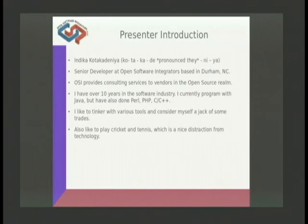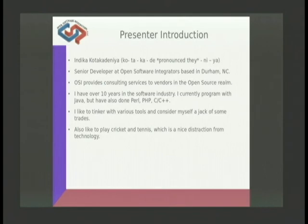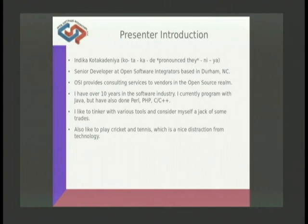A little bit about myself. I am Indika Kotakadenia. Yes, the last name is pretty long, but if you take it two letters at a time, it's pretty easy to pronounce. I'm a senior developer at Open Software Integrators. We are based in Durham, North Carolina. OSI provides consulting services to large vendors in the open source realm, like Red Hat and Spring Source. As a developer, I have over 10 years of experience, primarily with Java, but I started off doing C and C++, did a little bit of Perl and PHP. I consider myself a jack of some trades and master of none.